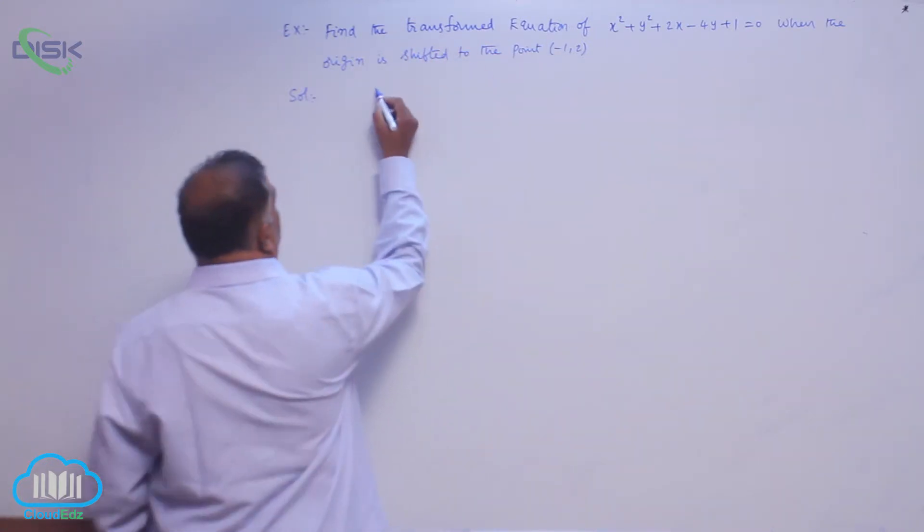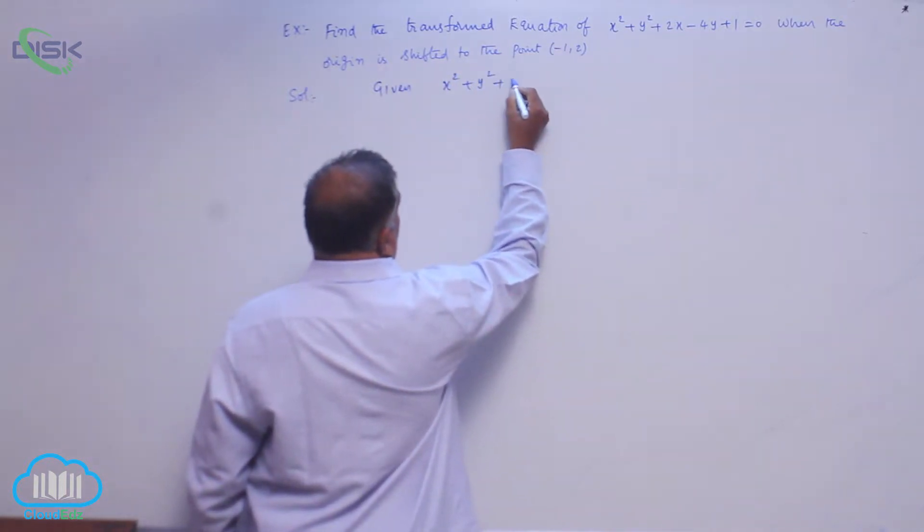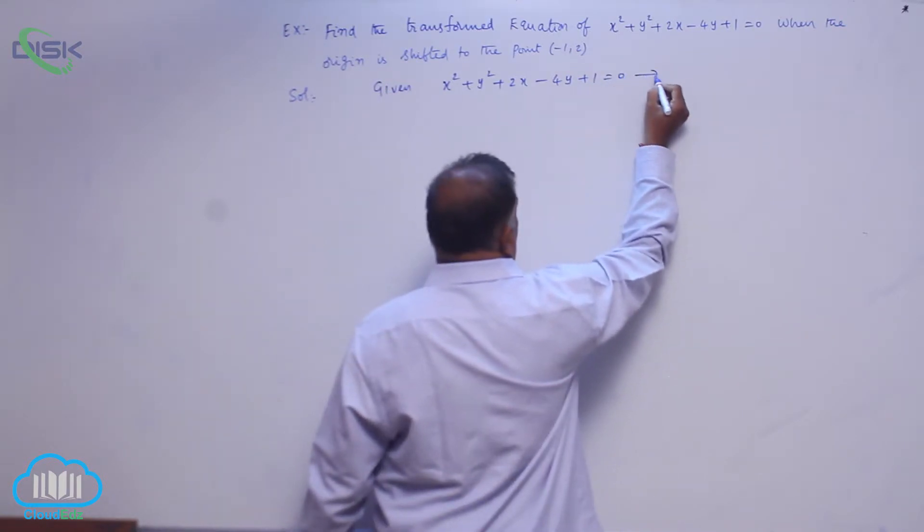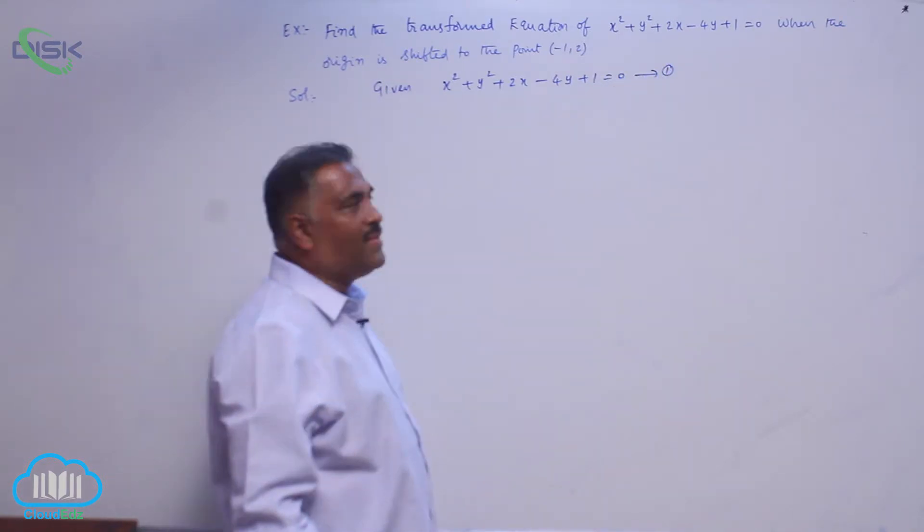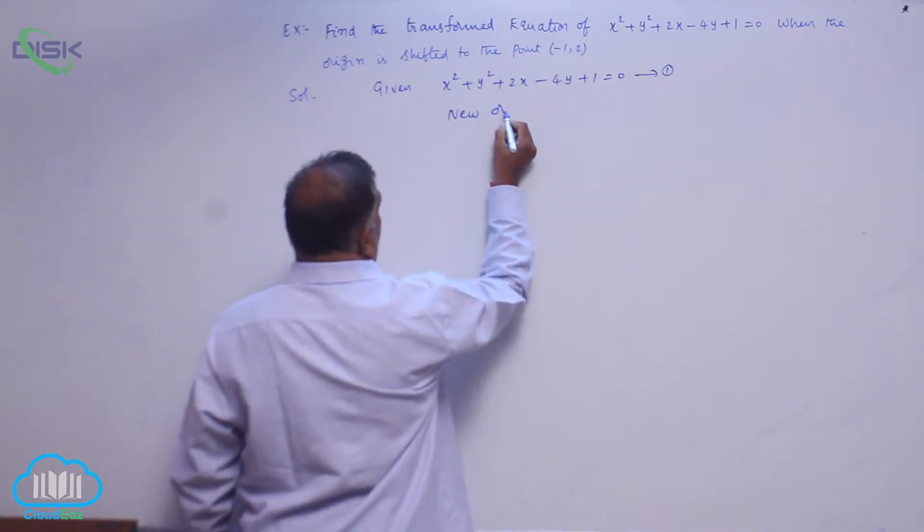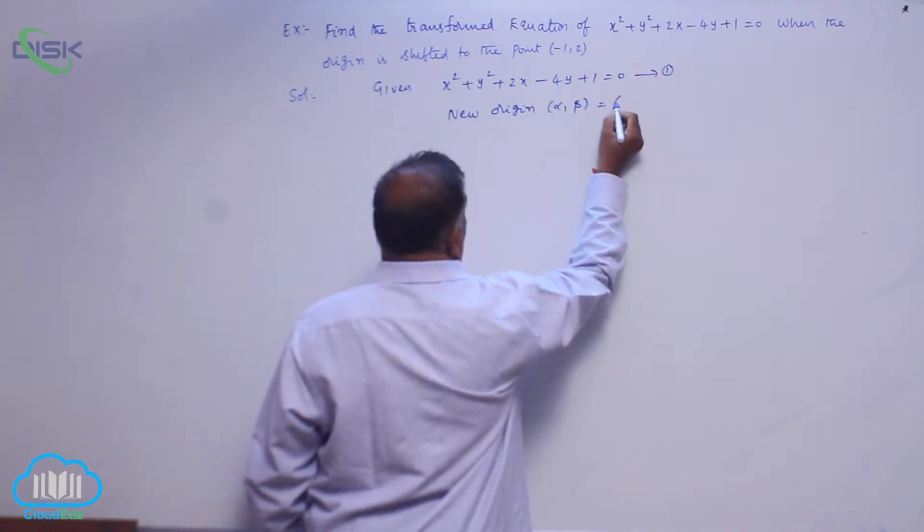Now the given equation is x² + y² + 2x - 4y + 1 = 0, equation 1. The new origin (α, β) is given as (-1, 2).